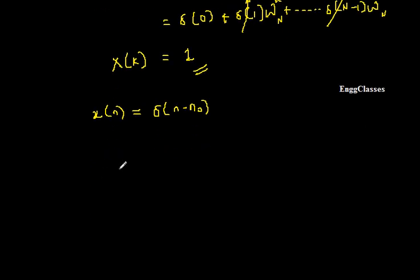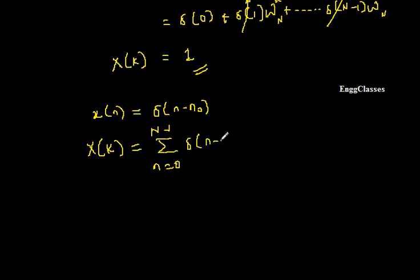x(n) = δ(n - n₀). Again I will make use of the DFT formula: X(k) = summation from n=0 to N-1 of δ(n - n₀) · W_N^(k·n). To get the answer, I need to expand this summation by placing values for n equal to 0, 1, till N-1.